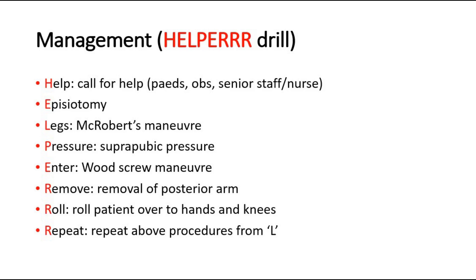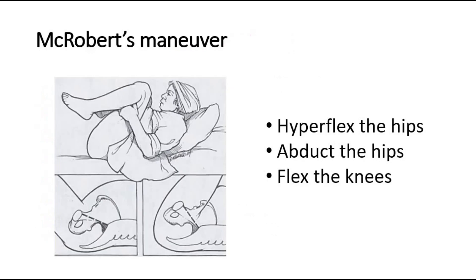E is to enter using the wood screw maneuver. R is to remove the posterior arm. The final R is to roll the patient over to hands and knees, then repeat the above procedure starting from L.